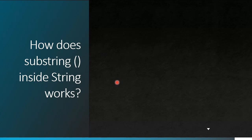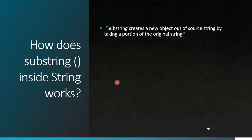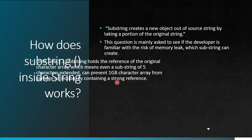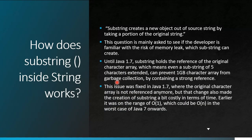The next question is: how does the substring method in String work? Substring creates a new object from the source string by taking a portion of the original string. Before Java 1.7, substring used to hold a reference to the original character array, meaning a substring of two or three characters could prevent a 1GB character array from being garbage collected. This was fixed in Java 1.7 — now a new object is created, removing the strong reference to the original character array.